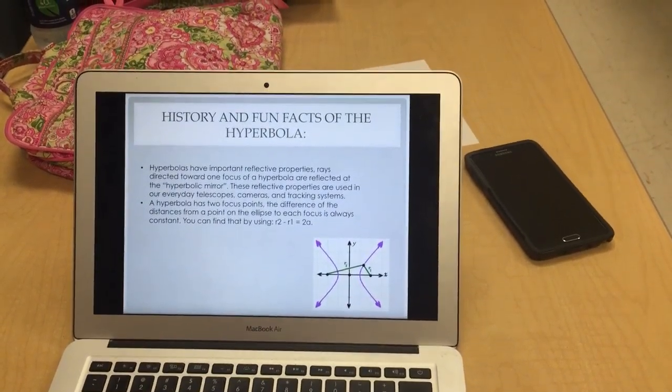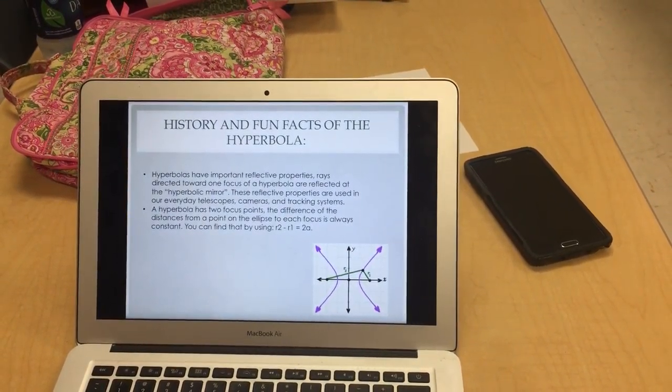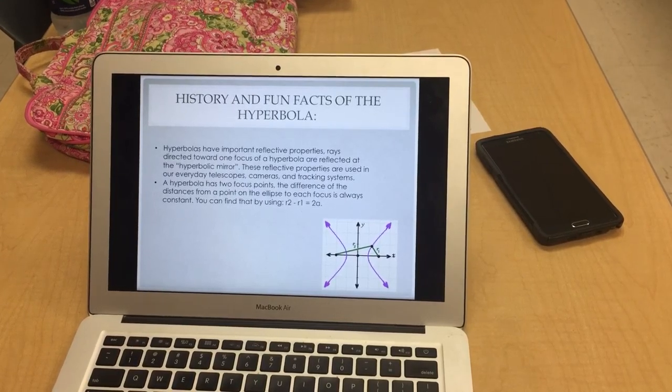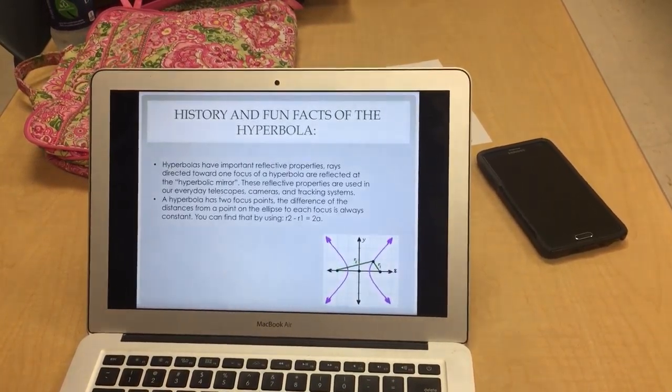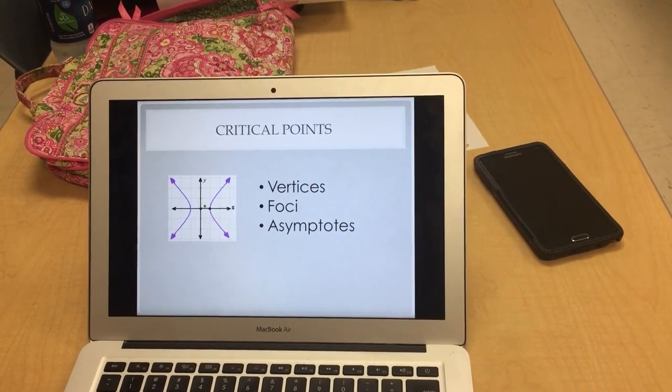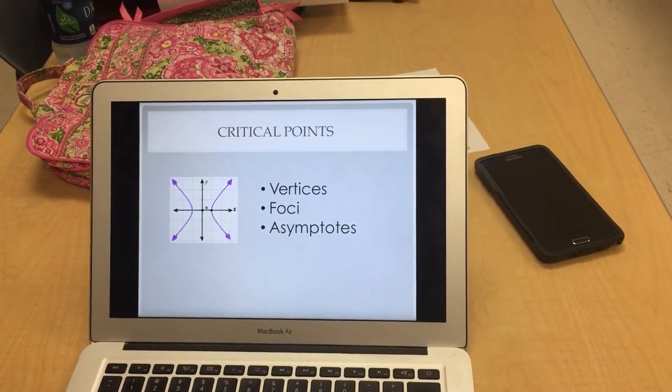Hyperbola has two focus points. The difference of the distance from a point on the ellipse to each focus is always constant. You can find that by subtracting R2 minus R1, which equals 2A. Okay, our critical points for a hyperbola are the vertices, the foci, and the asymptotes.